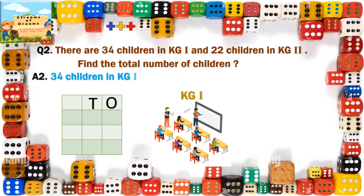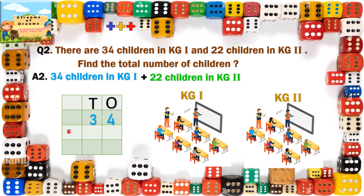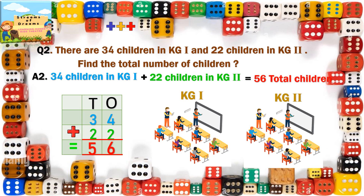34 children in KG1 — writing 34. And 22 children in KG2. So we are adding 22. Let's begin with your right side: 4 in your mind, 2 in your fingers — the answer will be 6. And 3 in your mind and 2 in your fingers will be 5. So the answer will be 56 total children.